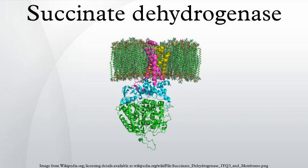In E1Cb, an enolate intermediate is formed, shown in image 7, before FAD accepts the hydride. Further research is required to determine which elimination mechanism succinate undergoes in succinate dehydrogenase. Oxidized fumarate, now loosely bound to the active site, is free to exit the protein.